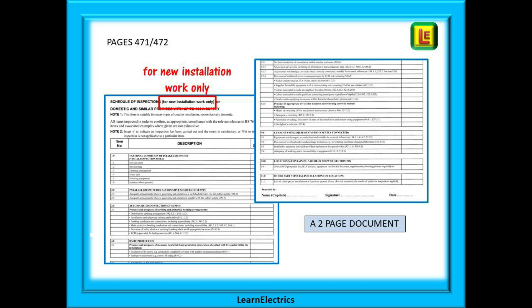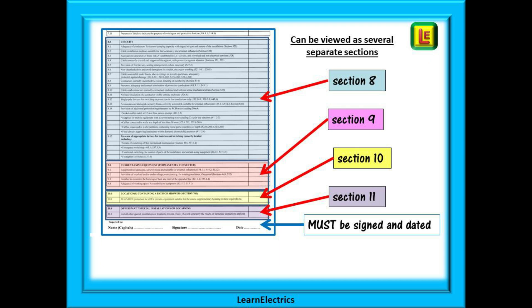The first thing to notice is the very first line: 'For new installation work only.' This schedule of inspections is for initial verification work only. If you add a new circuit to a property, for example, this is the form to use when you inspect the work that you have done. This form is not to be used for periodic inspections — they have their own forms.